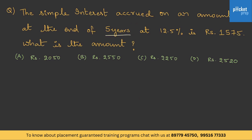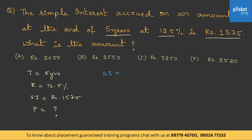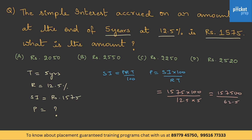Here is another question. The simple interest accrued on an amount at the end of 5 years at 12.5% is rupees 1575. What is the principal? Given: T = 5 years, R = 12.5%, SI = 1575. Using P = SI × 100 / RT, we get P = 1575 × 100 / (12.5 × 5) = 157500 / 62.5.